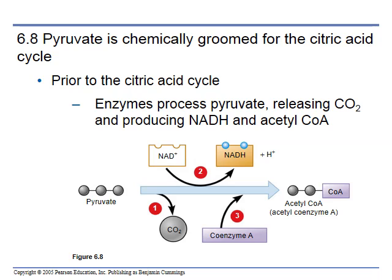The pyruvate is then ready to go into the citric acid cycle. It's that three-carbon compound — it used to have phosphates on either side, we've taken them off to make ATP. We send it to the citric acid cycle, where enzymes produce the pyruvate, release CO2, make an NADH, and produce acetyl-CoA. This is what ultimately gets sent off to the citric acid cycle. We also get this high-energy NADH, which will go to the electron transport chain.